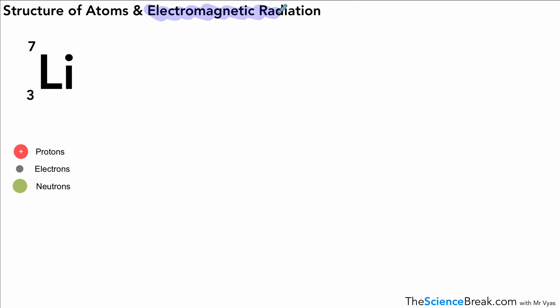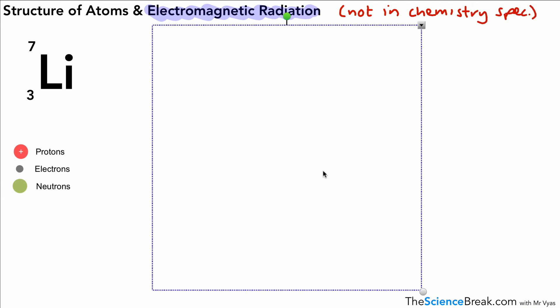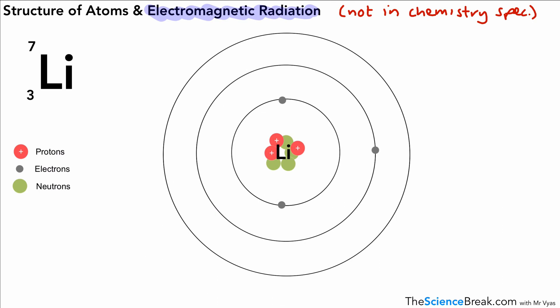And then this is the final thing. This is the structure of atoms and how we link them to electromagnetic radiation. Now, this is not in the chemistry spec, so this is specific to physics. So this we haven't gone over before. But let's see what we mean by this. Here is our lithium atom. And as we know, we've got three protons and three electrons. We are going to look at what happens with the movement of electrons across energy levels. These are the energy levels, often referred to as shells.